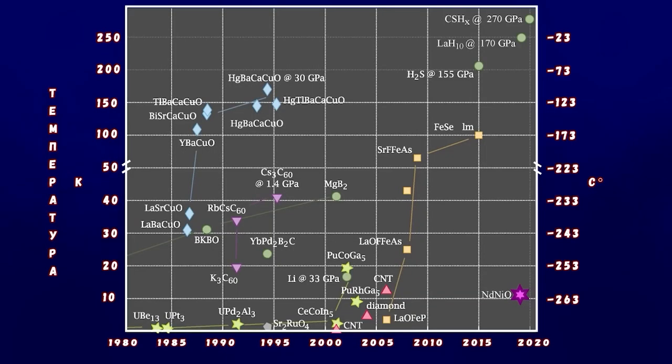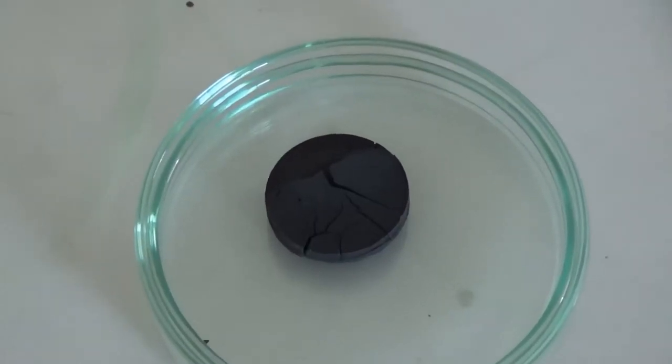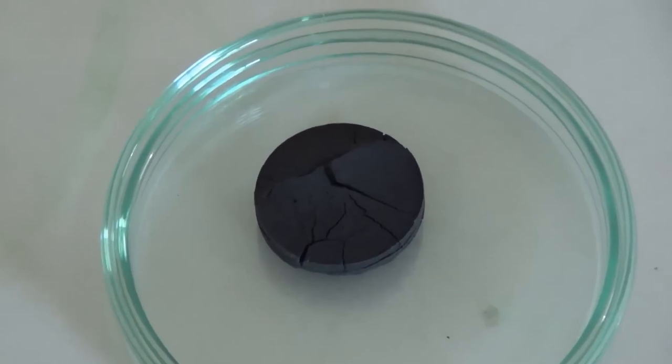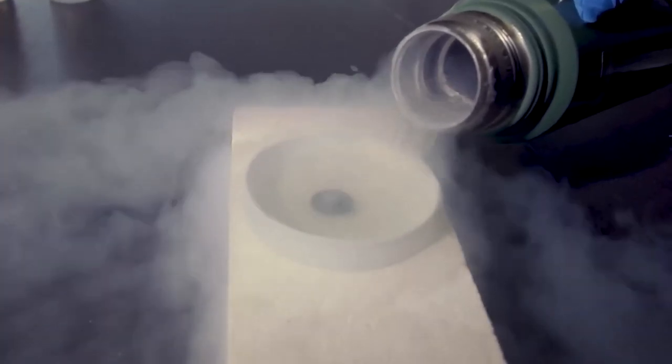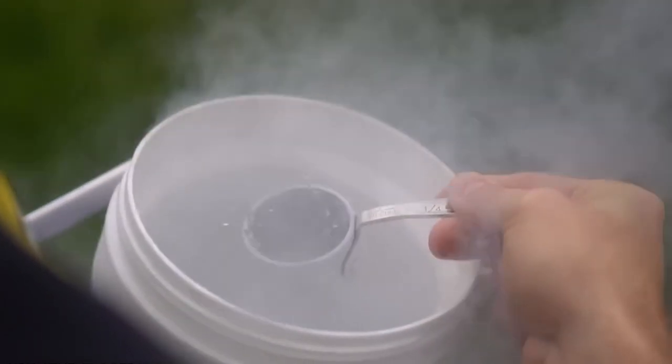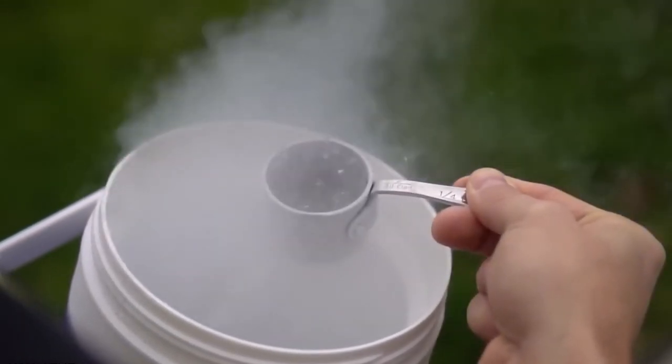In 1987, one type of cuprate, yttrium barium copper oxide, exhibited superconductivity at 92 Kelvin or minus 181 degrees Celsius. This marked a revolution in superconducting technology, as these conductors could be cooled using liquid nitrogen, which is significantly cheaper than the liquid helium used to cool low temperature superconductors.